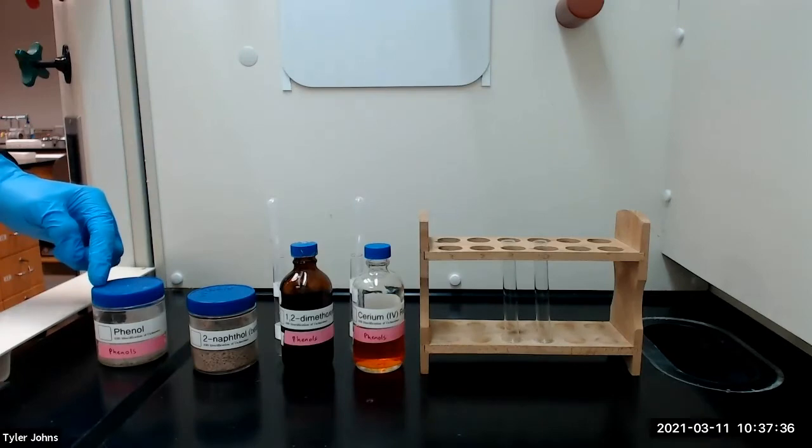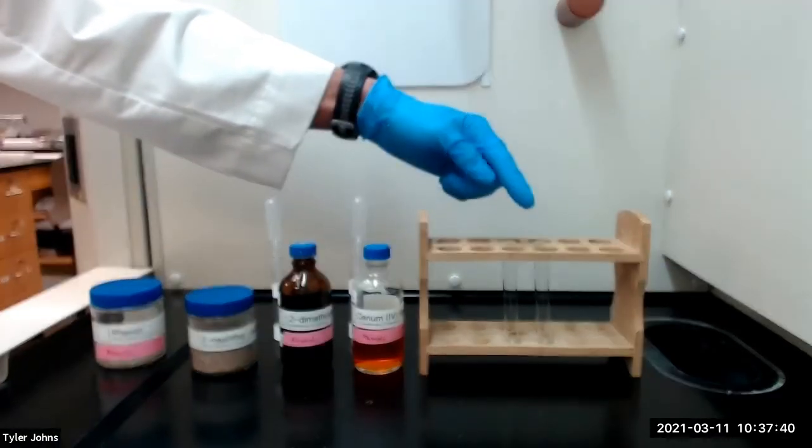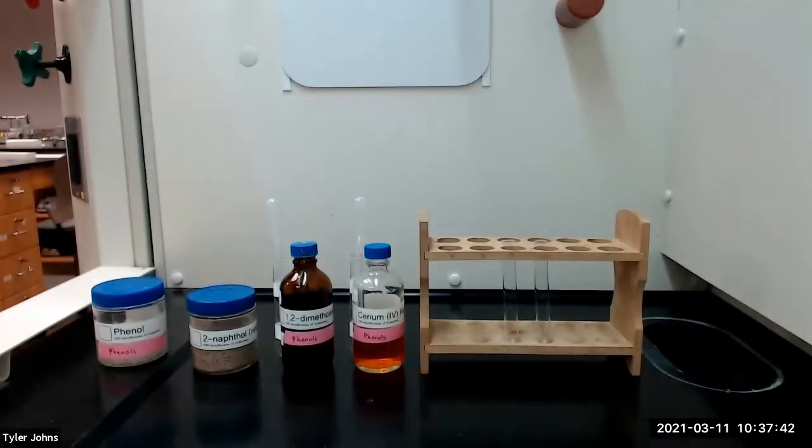We will then add a small amount of each of our test compounds to the solution in the test tubes and stir with a micro spatula. The unsubstituted phenol forms a dark brown precipitate and other phenols should yield a deep red solution.